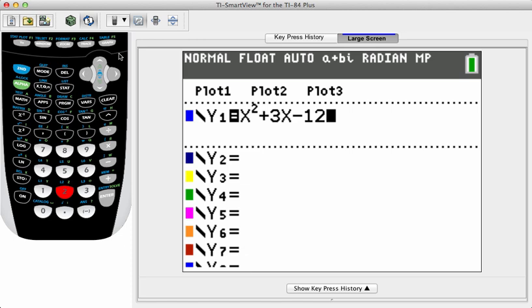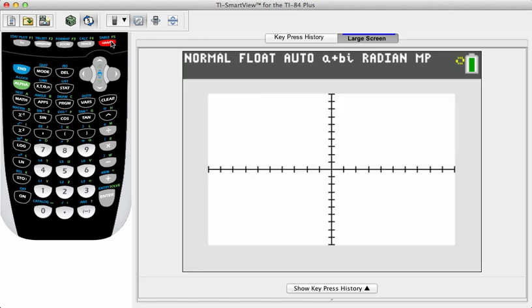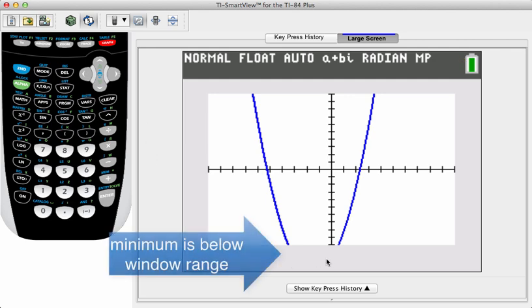Now, let's take a look at what the function is going to draw here. Press the graph key on the upper row of the keypad. After a few moments, we get to see the parabola, but, uh-oh, look at this. It goes off the screen, but that's okay.